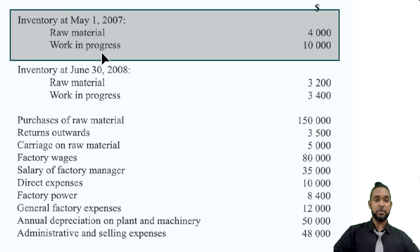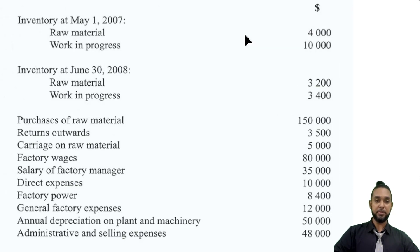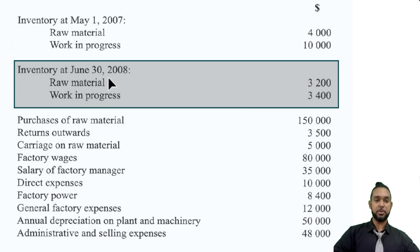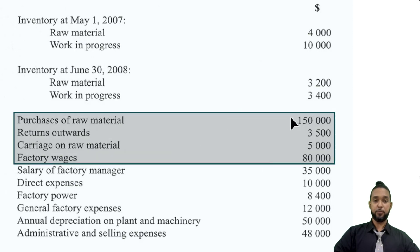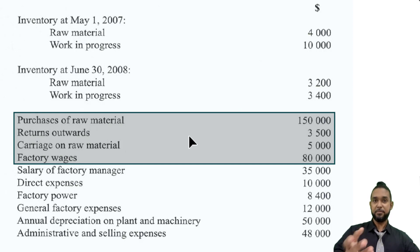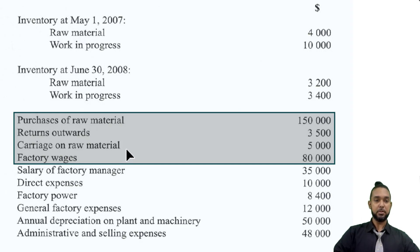The opening stock for raw material is $4,000 and work in progress is $10,000. The closing stock at June 30th, 2008: raw material is $3,200 and work in progress is $3,400. We also have purchases of raw material, returns outwards of raw material — since we have no information regarding finished goods, we can safely assume the returns outwards relates to raw materials — along with carriage on raw materials and factory wages. All of these would be part of your prime cost, since we're doing a manufacturing account.